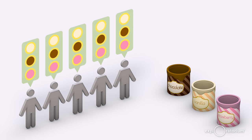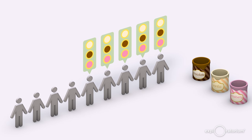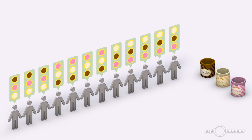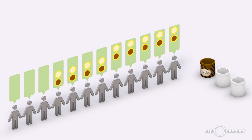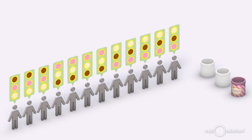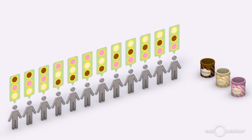Suppose we hold another election to choose an ice cream flavor using ranked voting. Five people vote for vanilla first, then chocolate, then strawberry. Four people vote for strawberry first, then vanilla, then chocolate. And three people vote for chocolate, then strawberry, then vanilla. Which flavor is this group's favorite? It can't be chocolate because a majority prefer vanilla to chocolate. But it can't be vanilla because a majority prefer strawberry to vanilla. However, it can't be strawberry either because a majority prefer chocolate to strawberry. No matter which flavor we choose, we can always find a majority of the group that would be happier if we switched to something else.